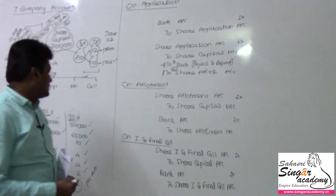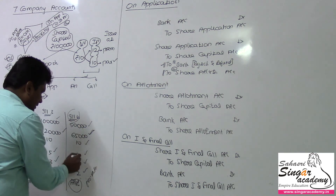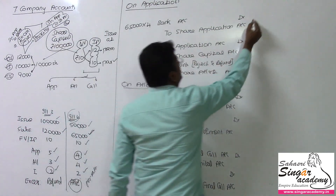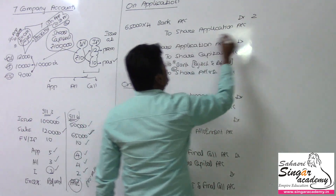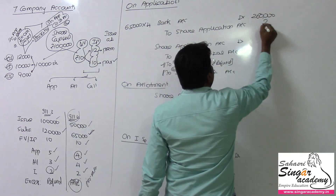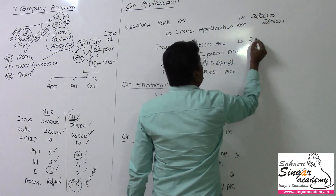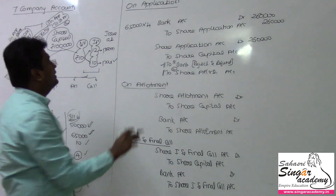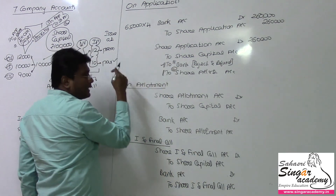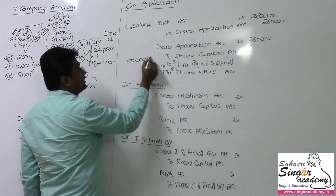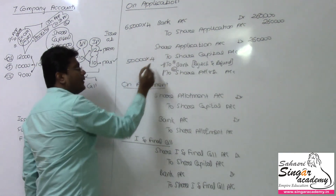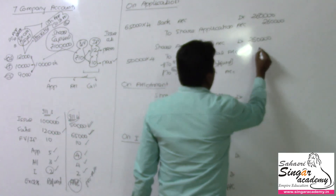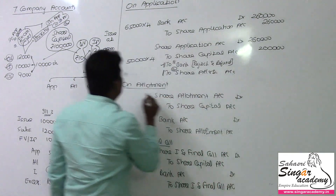Let's see illustration 4 calculations. 65,000 applications at 4 rupees each — so 65,000 × 4 = 2,60,000 rupees received for application. For 50,000 allotted shares: 50,000 × 4 = 2,00,000 rupees transferable to allotment. The rejection balance is 15,000 shares × 4 = 60,000 rupees.